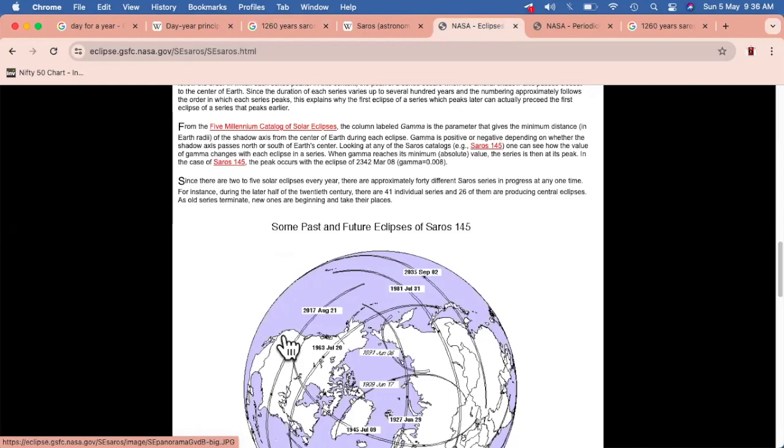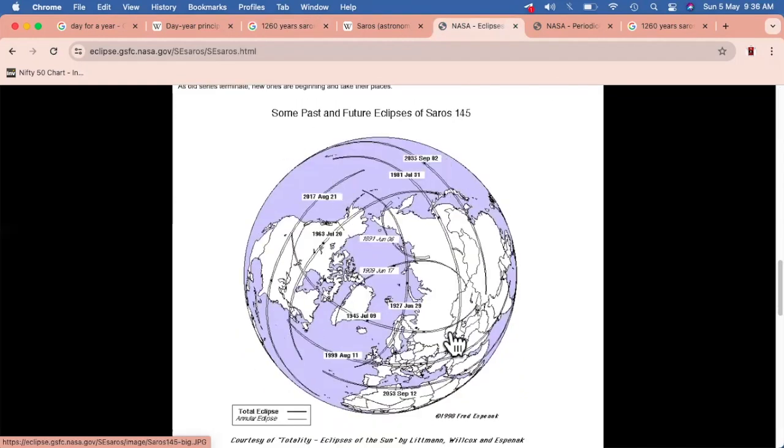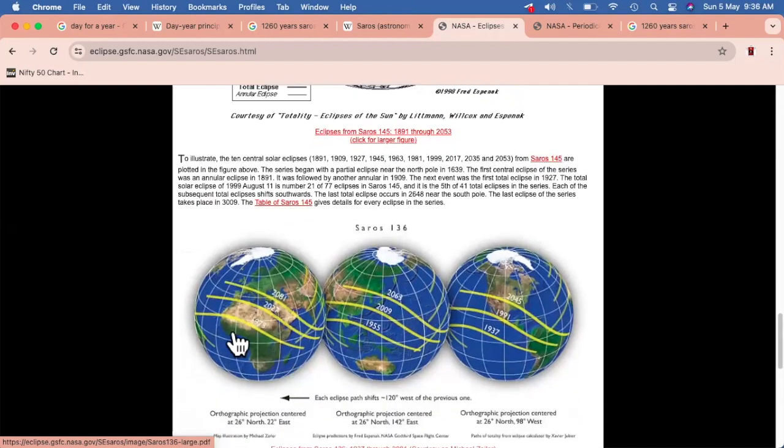This is all the information which has been given over here. Probably you can try to find out more. The cycles which are there, specifically of the Saros cycles, are being mentioned over here. They have been given more in details. So what year, which cycle, and through which phase it would be passing.